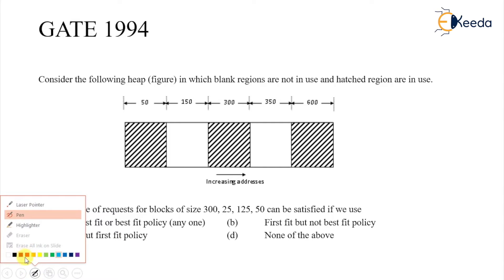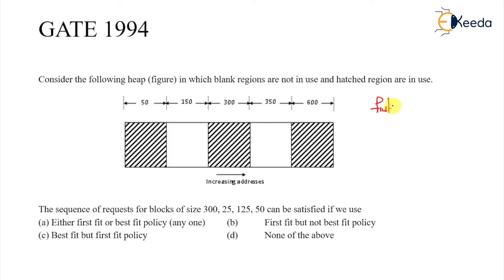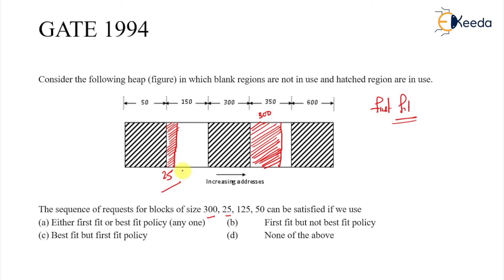Now applying the first fit method — find the first hole that is large enough. When 300 comes, the first hole large enough is this one, so I allocate 300 here. Then 25 comes and the first hole large enough is here — 25. Then 125 comes and I allocate it here — 125k.